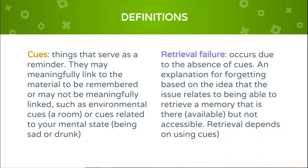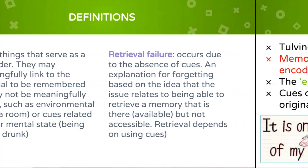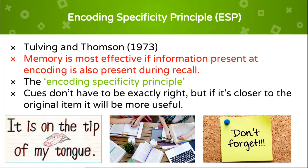Tulving and Thompson (1973) proposed the encoding specificity principle. This is the idea that memory is most effective if information that was present at encoding is also present during recall. When we store a new memory, we also store information about the situation in which we learned it — these are known as retrieval cues. The encoding specificity principle states that cues don't have to be exactly right, but the closer they are to the original item, the more useful they will be.